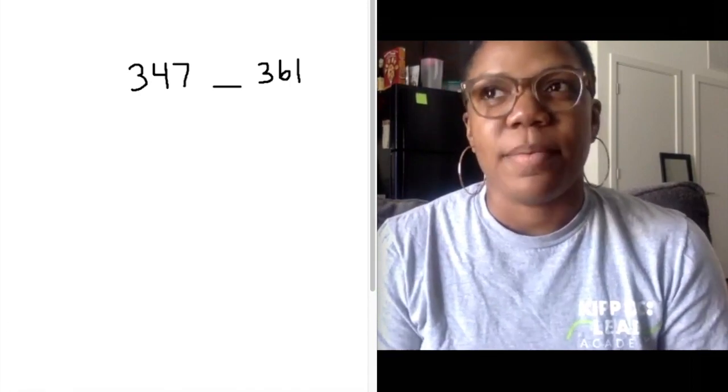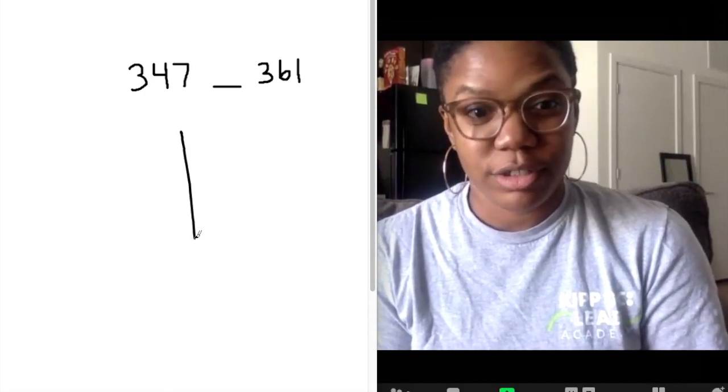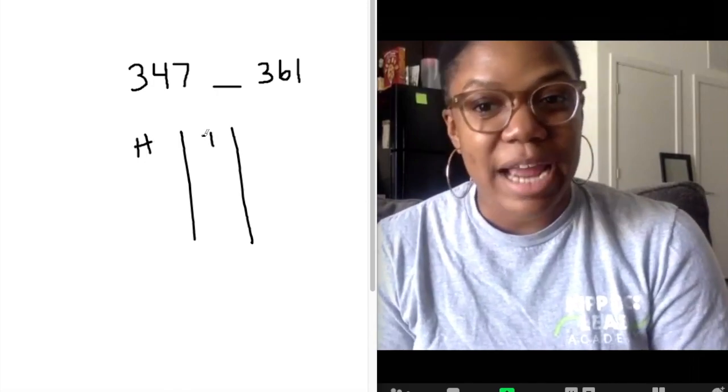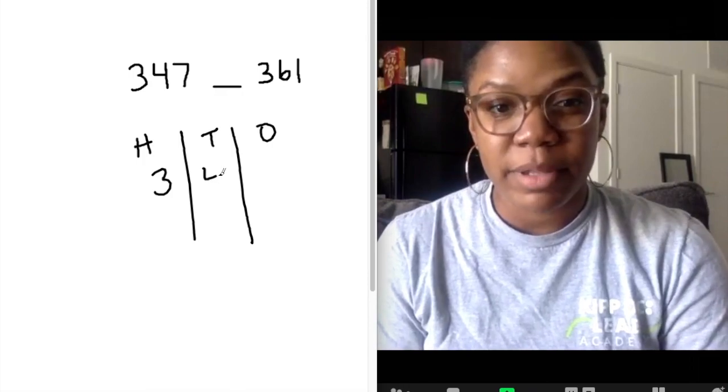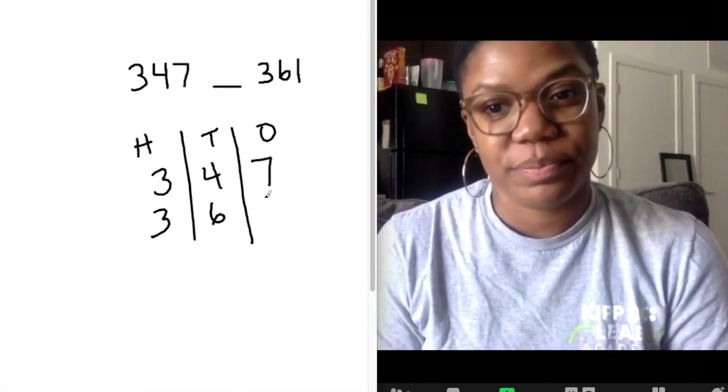Comparing numbers. Okay, let's see. First, you should always start with your place value chart. Once you've got your place value chart, you want to stack your numbers in your place value chart. So I would put 347 in my place value chart. I would put 361 in my place value chart. Got it.